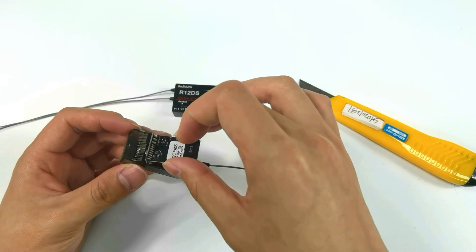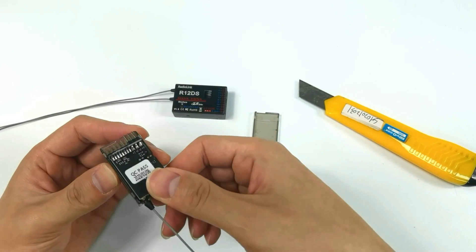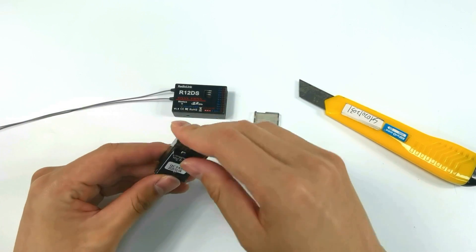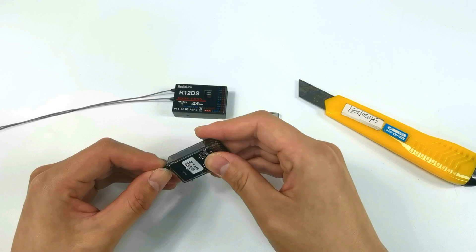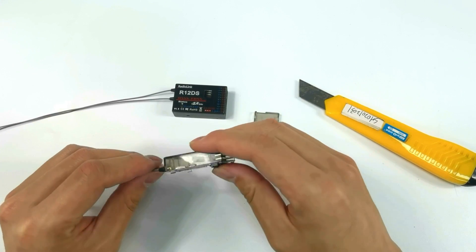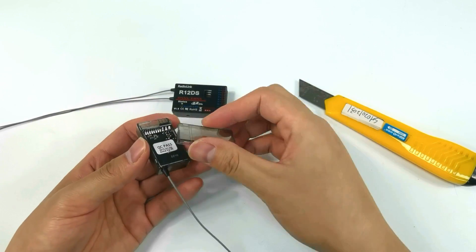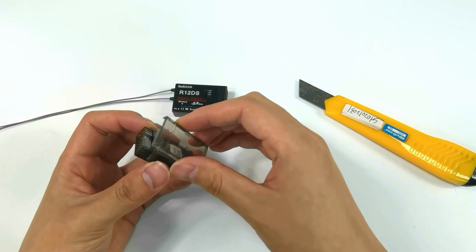Put the board inside the shell. Put in the pins first, and cover the other shell to fix the board.